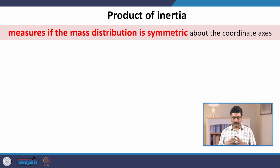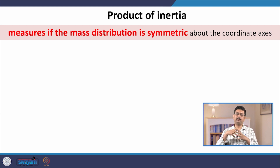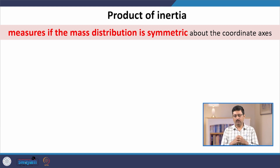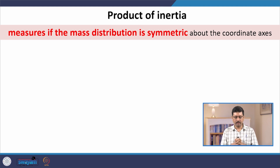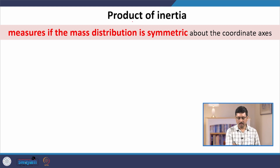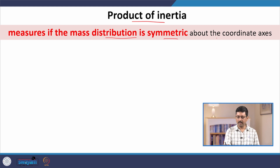So far, the moment of inertia I_xx, I_yy, and I_zz measure the spread of the mass distribution about the axis of rotation when we choose the x, y, or z axis. Now, we often also want to capture another aspect of the mass distribution — whether this mass distribution is symmetric or asymmetric about our chosen axis. Here we need to introduce the concept called product of inertia, which measures if the mass distribution is symmetric or not about our chosen coordinate axes.